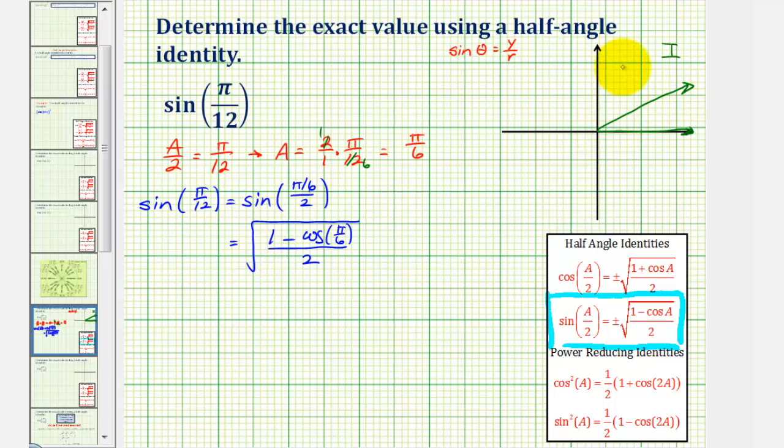Where again, the reference angle is pi over six radians, or 30 degrees. So if we sketch a reference triangle, we need to recognize that we have a 30, 60, 90 reference triangle. So we can label the short leg one, the hypotenuse two, and the longer leg, square root three.